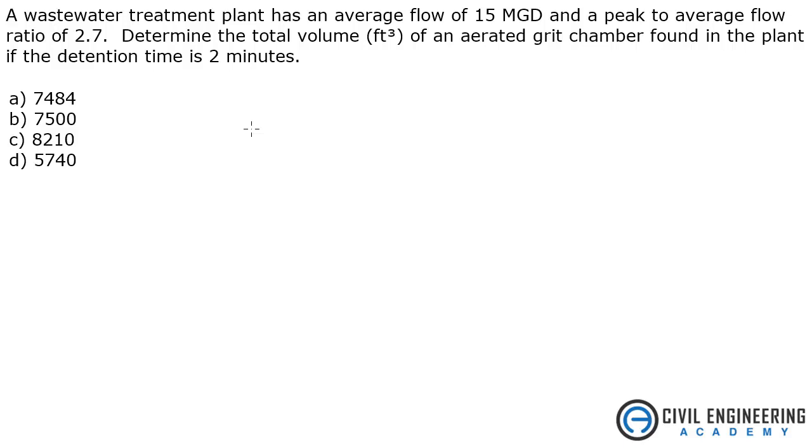The problem states: a wastewater treatment plant has an average flow of 15 million gallons per day and a peak to average flow ratio of 2.7. Determine the total volume in cubic feet of an aerated grit chamber found in the plant if the detention time is 2 minutes.